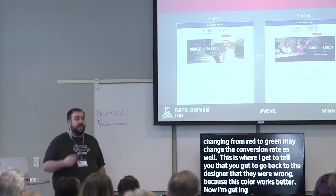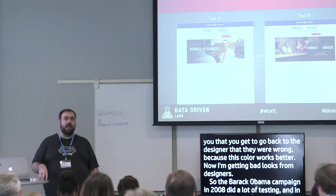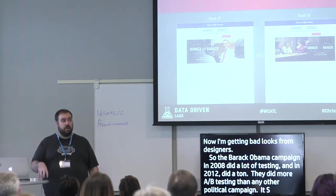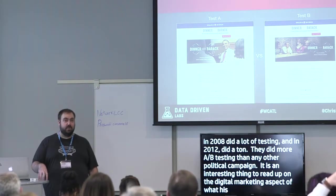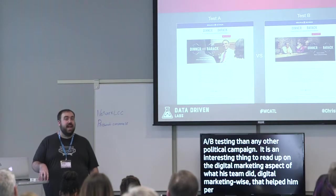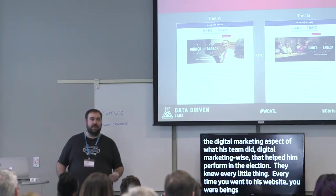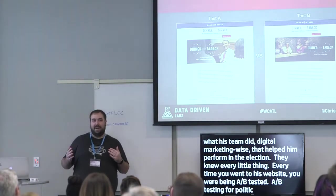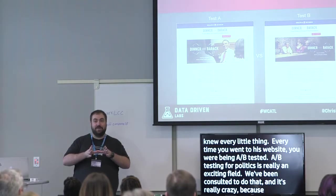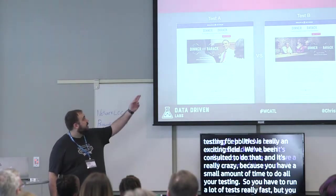Test your images. The Barack Obama campaign in 2008 and especially 2012 did more A/B testing than any other political campaign. Every time you went to his website, something was changing and being tested. A/B testing for politics is really an exciting field — you have a small amount of time to run lots of tests fast, but you also have a lot of traffic. In this case, images were being tested.